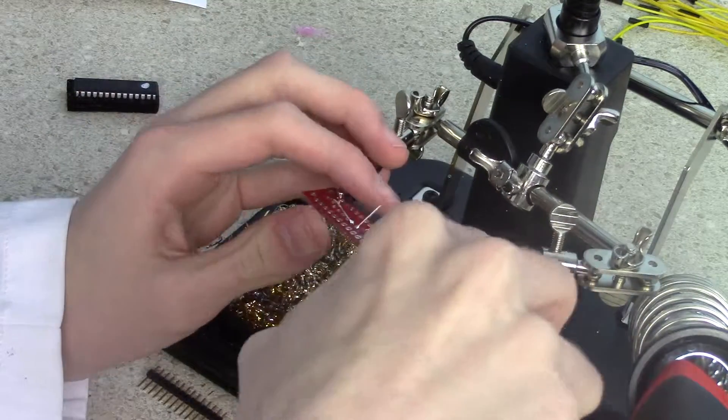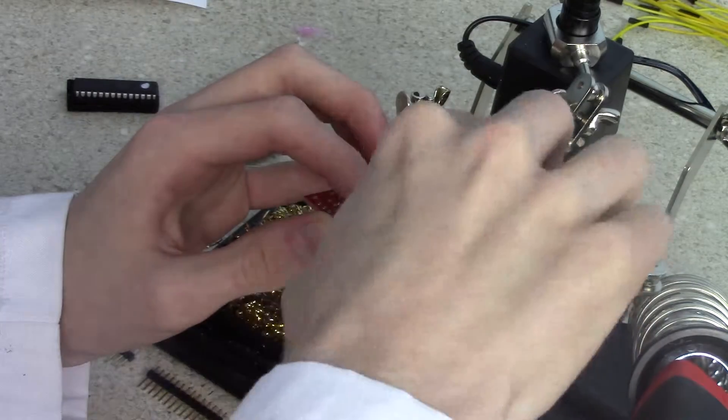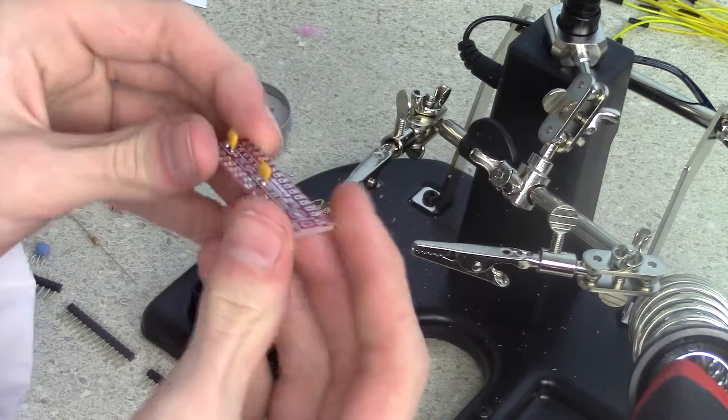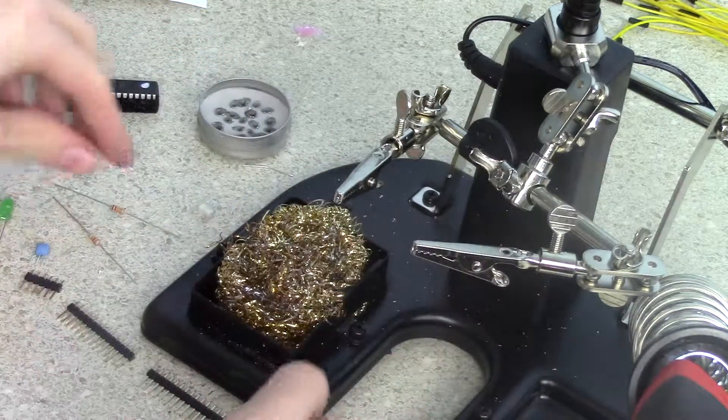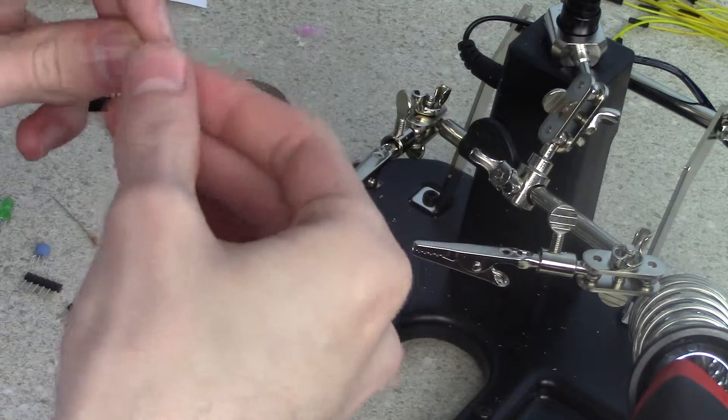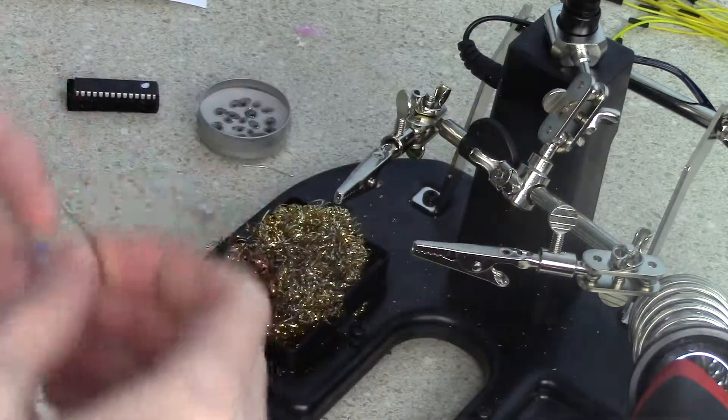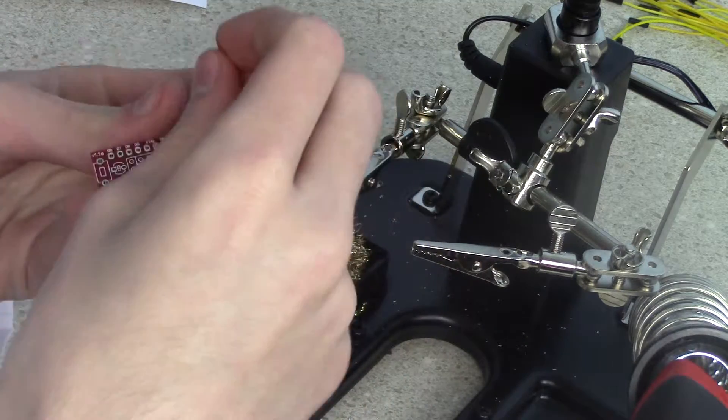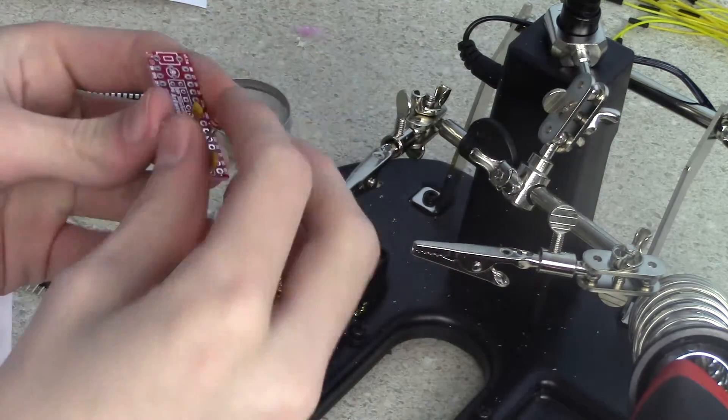Put those newfound soldering skills to the test and solder the capacitors into place. As a reminder, always wear some sort of eye protection when cutting the legs off because they can fly off in any direction, and I had about 7 bounce off my glasses making this Arduino alone.